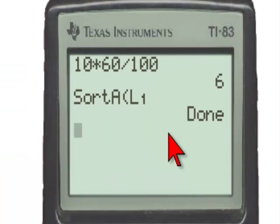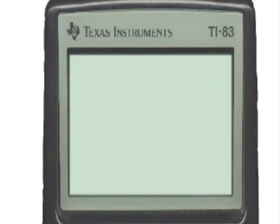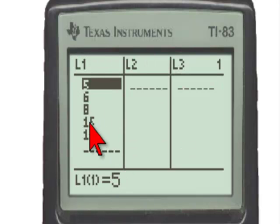It says done and therefore the numbers are in ascending order. We'll clear this home screen and go back to STAT enter to look at the list editor.